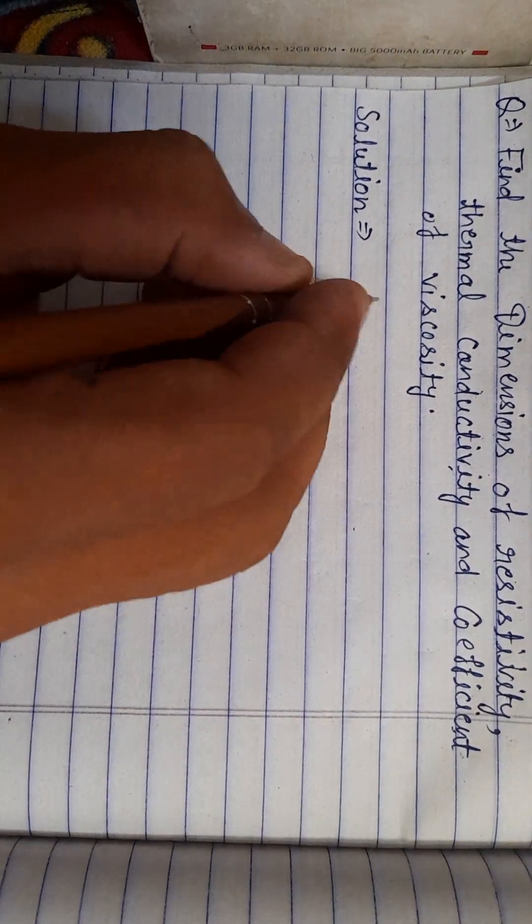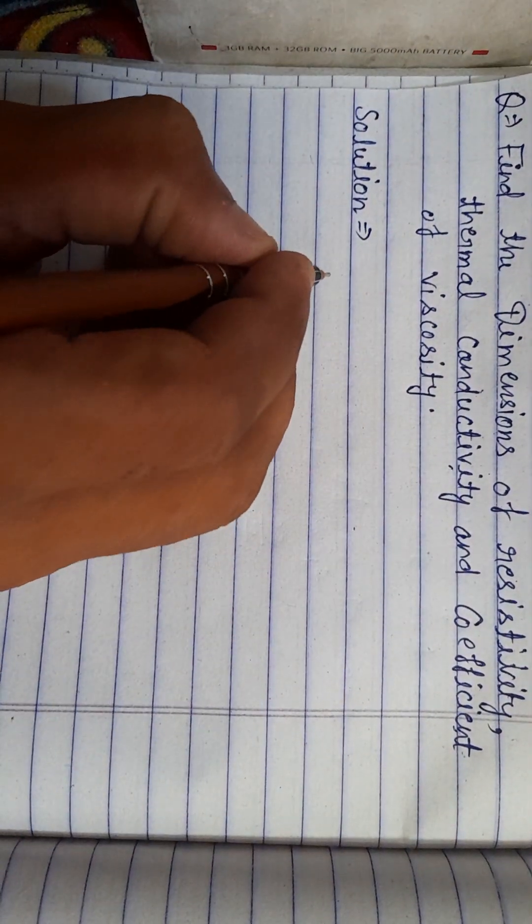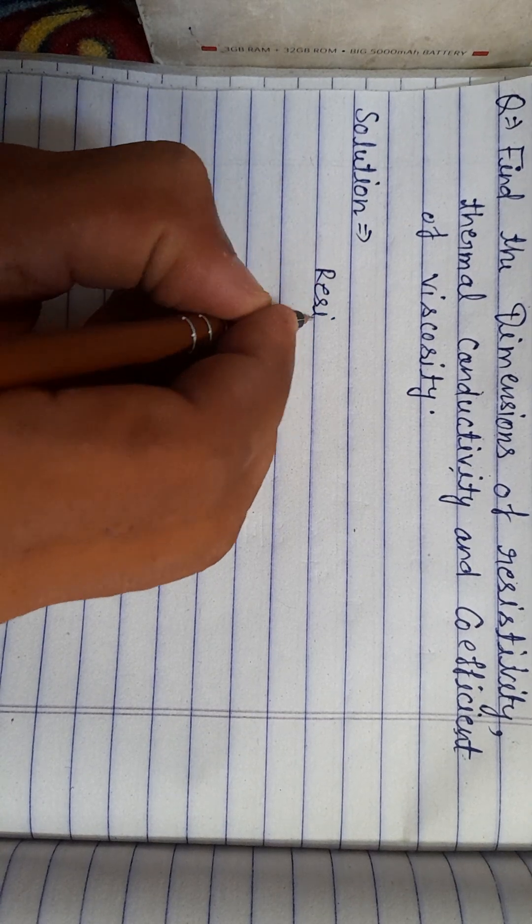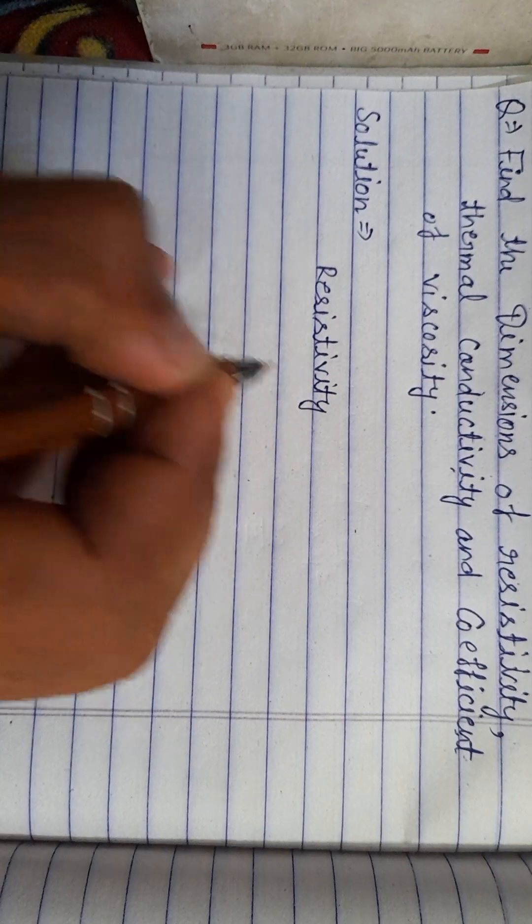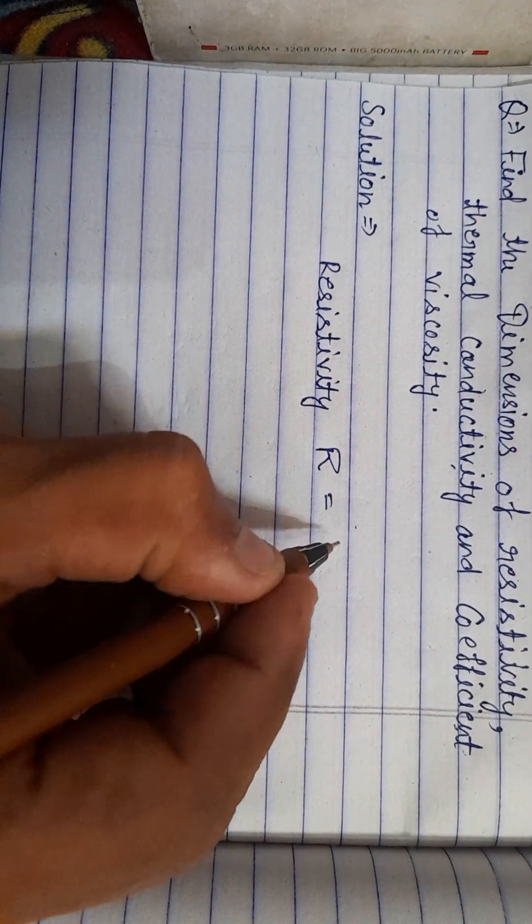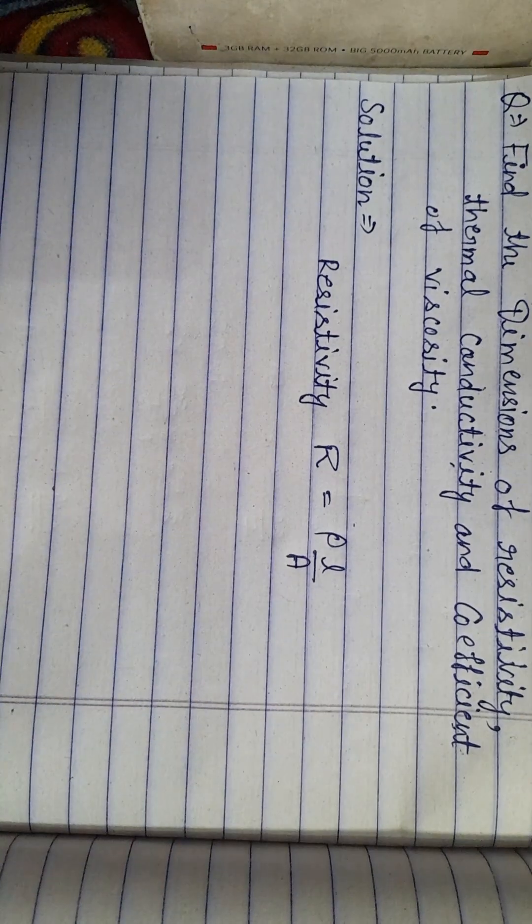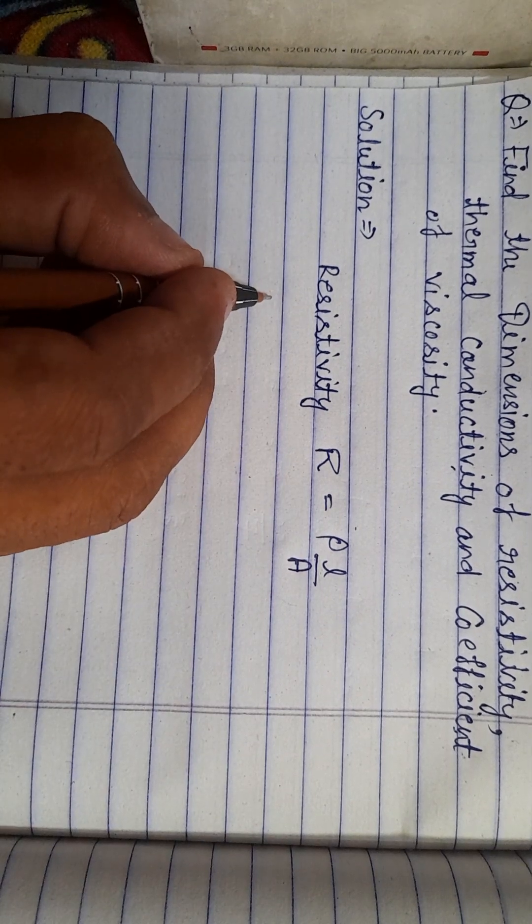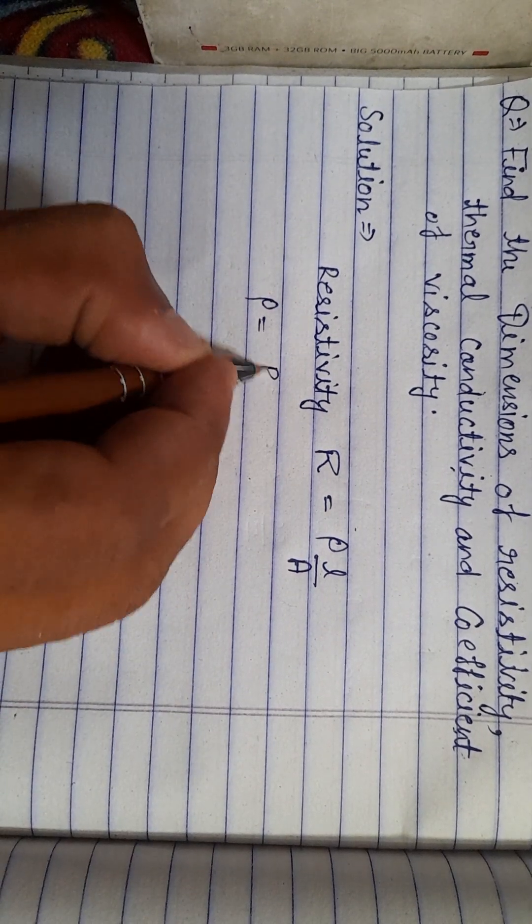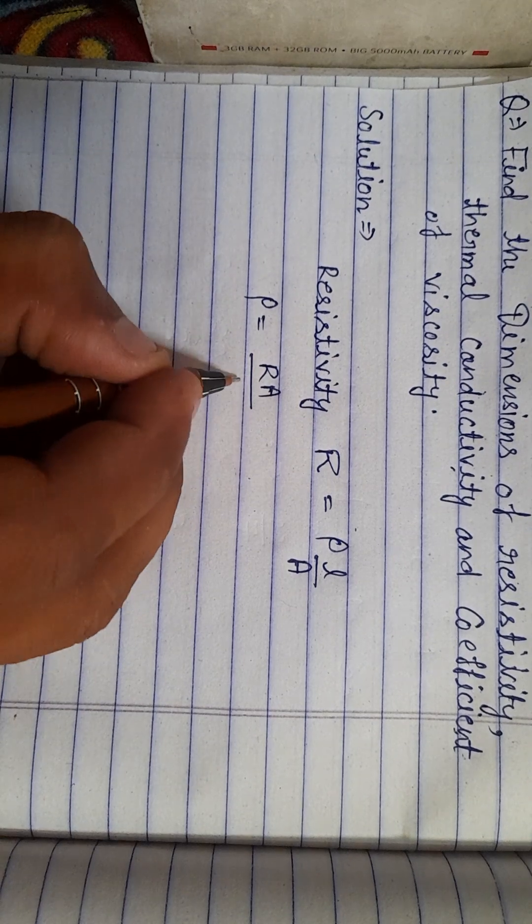I'll tell you the formula for resistivity. What is the formula of resistivity? Resistivity R is equal to rho L upon A. From here you can find the value: rho is equal to R A upon L.